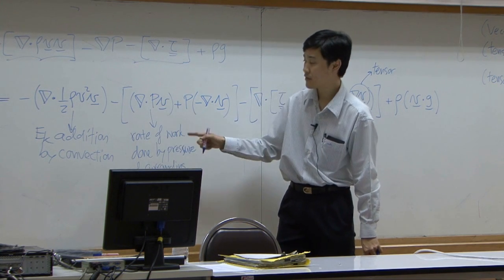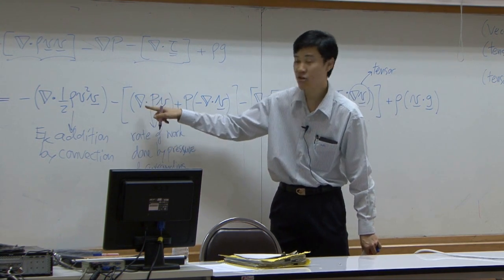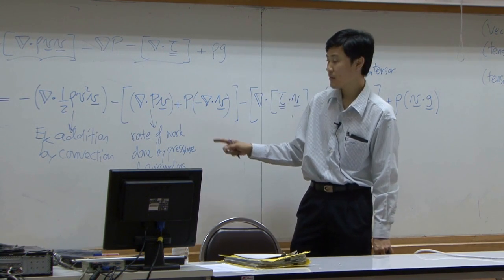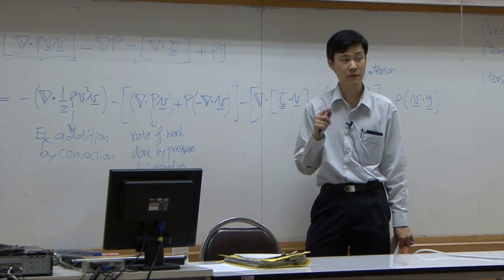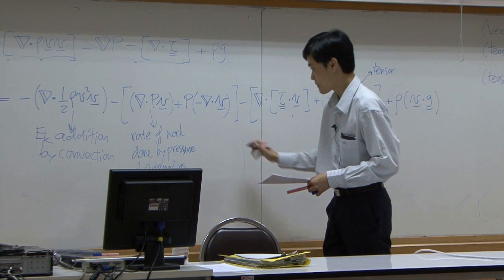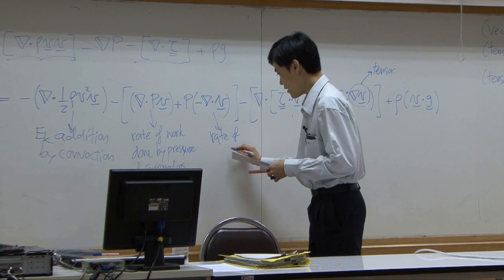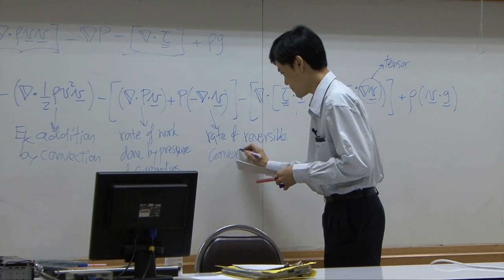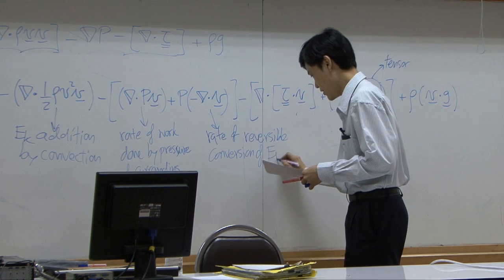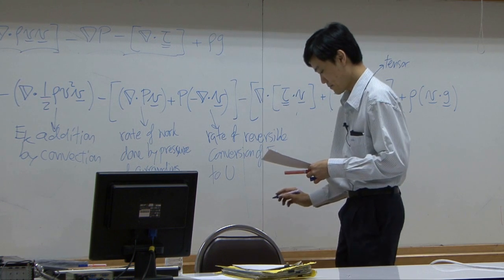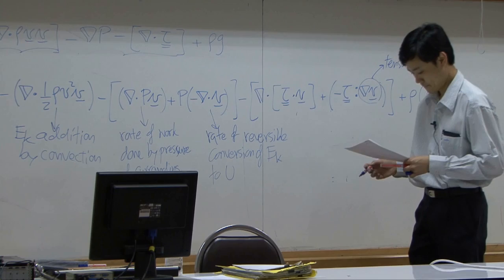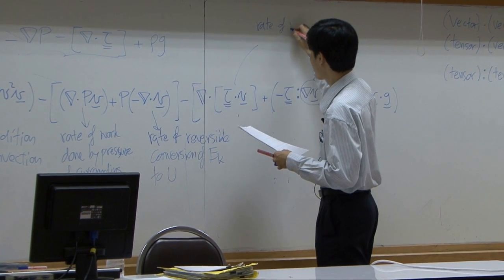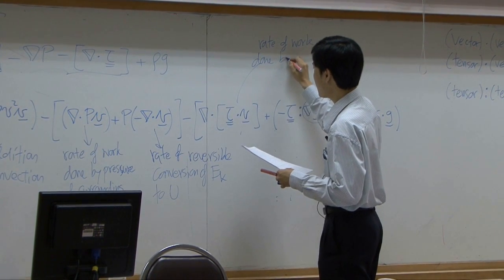For this term, it's pressure times some sort of velocity — pressure times velocity gives you work. This term is work done by pressure of the surrounding on the fluid. This term gives you the rate of reversible conversion of kinetic energy to internal energy. This term is the rate of work done by viscous force.